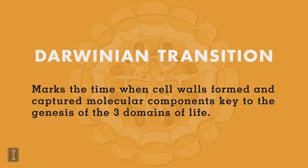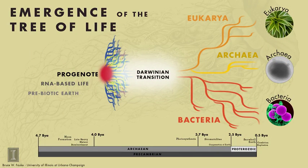Then a really dramatic change took place called the Darwinian transition, and the Darwinian transition is when cell walls actually formed. Cell walls went from a proto early loose stage to a real cell wall as we know them now, and at that transition the cell walls captured these molecular components. At that moment we had the genesis of the three domains of life, and that's what was described in the 1977 paper by Rose and Fox.